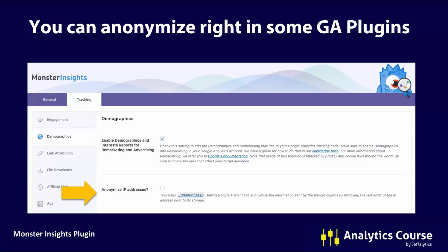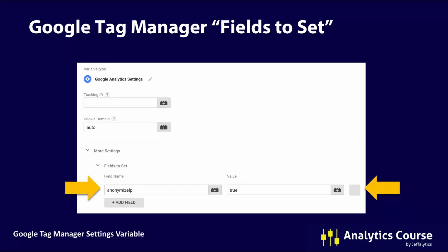If you're using a plugin — for example, MonsterInsights for WordPress — all you need to do is check a button to anonymize IP addresses and you're good to go. It simply adds that function to your code on your behalf. And within Google Tag Manager, in your Google Analytics settings variable under fields to set, set the field name anonymizeIp — with a capital I and P — to a value of true. This is the equivalent of doing it manually in analytics.js.